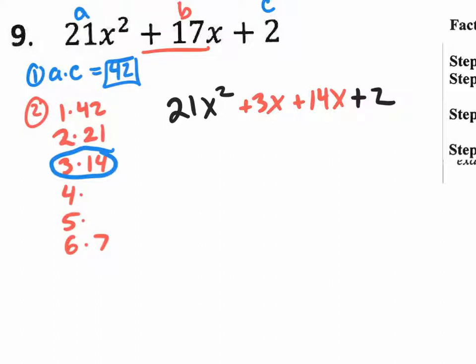And at the very end I still have the plus 2. So all I did was replace the 17x with these two numbers. So the 17 became these two numbers right there. After all, 3x plus 14x really is 17x. So you rewrite it into 4 terms.